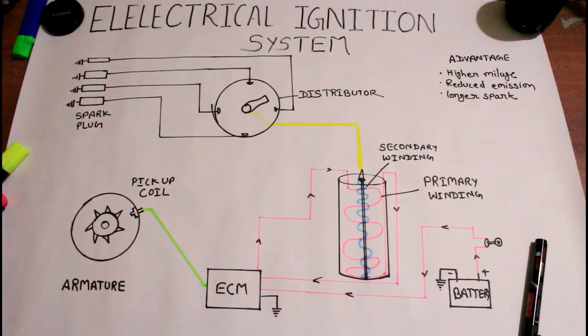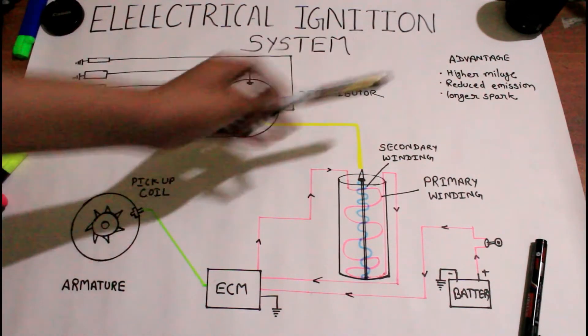So this is the electrical ignition system which is very important for vehicles. It has advantages like higher mileage, reduced emission, and longer spark.